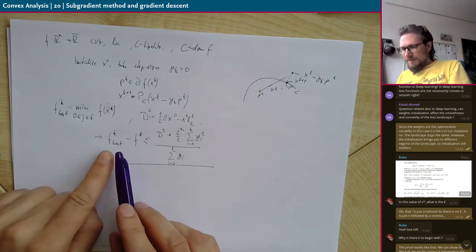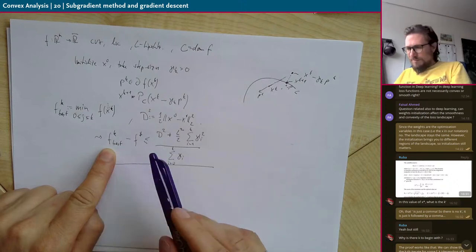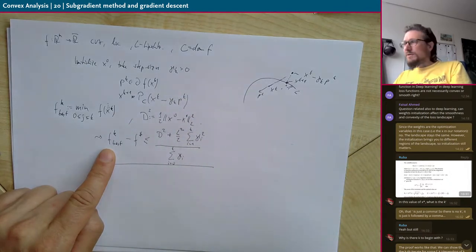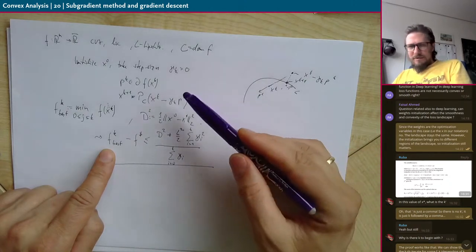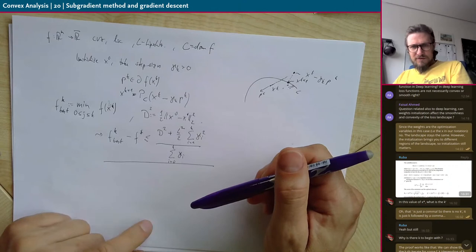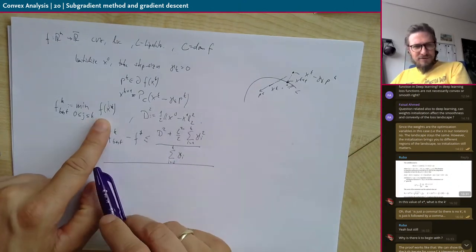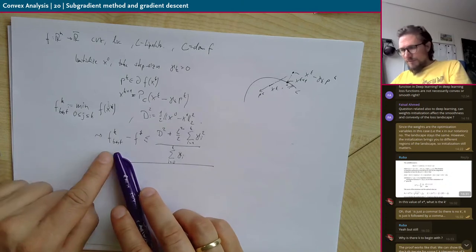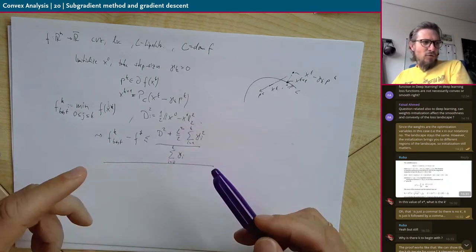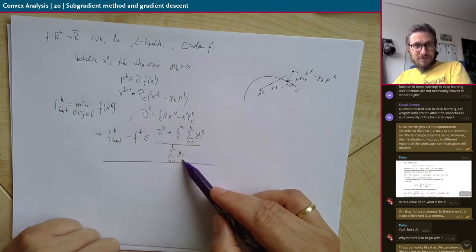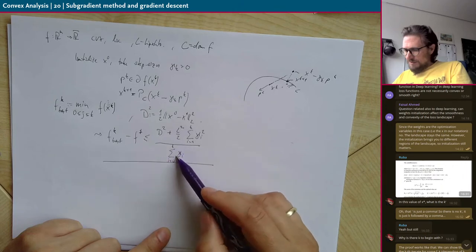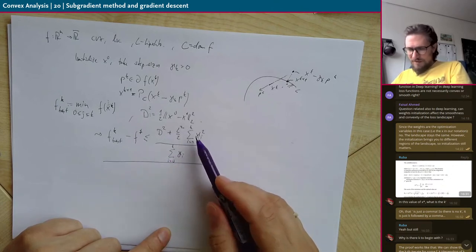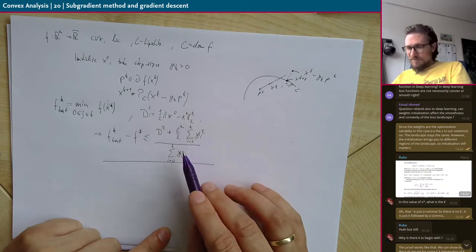One important thing is that the function values are not always decreasing in the subgradient method. There always exists a subgradient pointing in a decent direction where the function decreases, but some subgradients do not. You'll see an example in the exercises. We can't guarantee these values get smaller and smaller, but we can still show this bound: after k iterations, the best value achieved up to that point satisfies the inequality. The choice of step size really makes a difference.